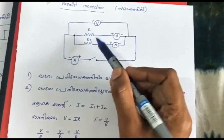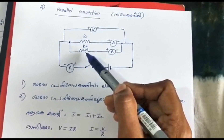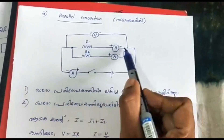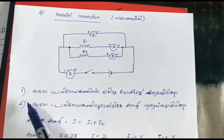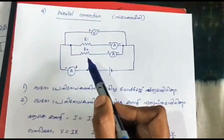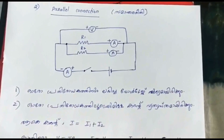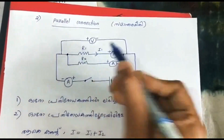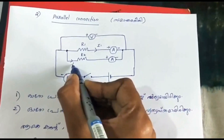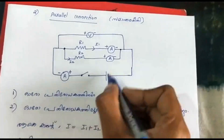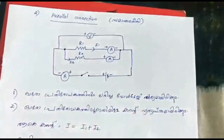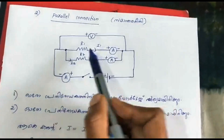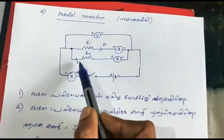This is the parallel connection. We have connected R1 and R2 with the same initial point and final point. R1 and R2 are in parallel. R1 will pass current i1 and R2 will pass current i2. This is the plus terminal and minus terminal.